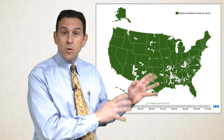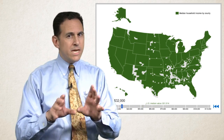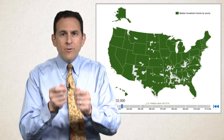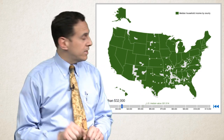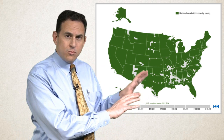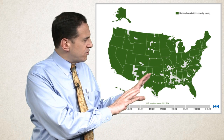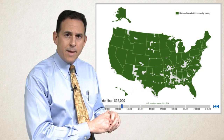This is a more modern map, also economics but income this time instead of wealth — average household income on the county level, and there are two colors represented on this map.